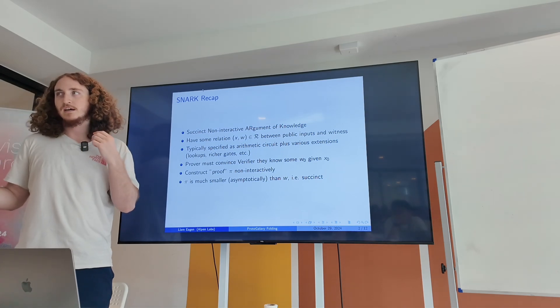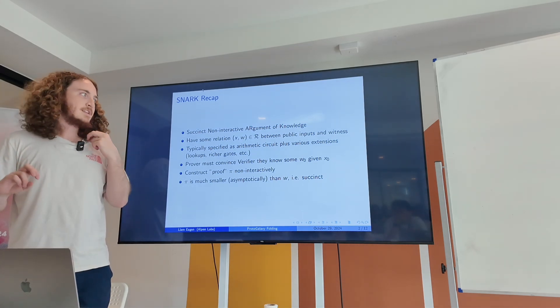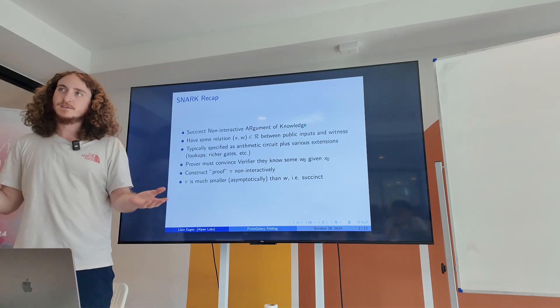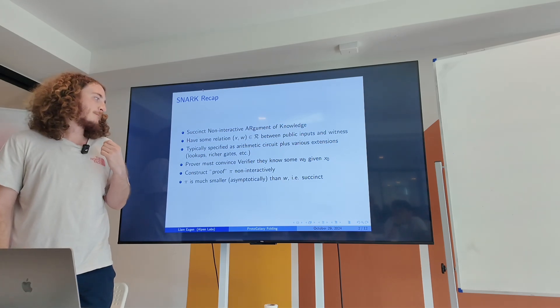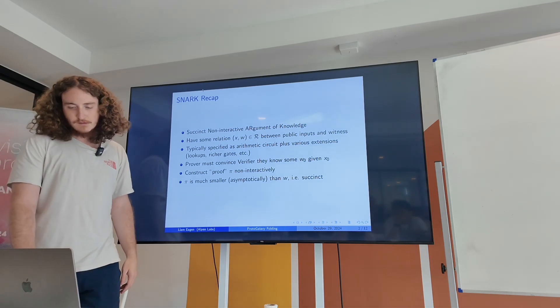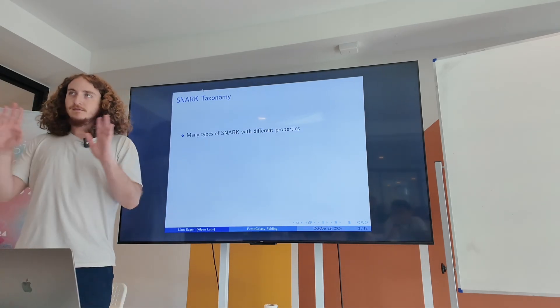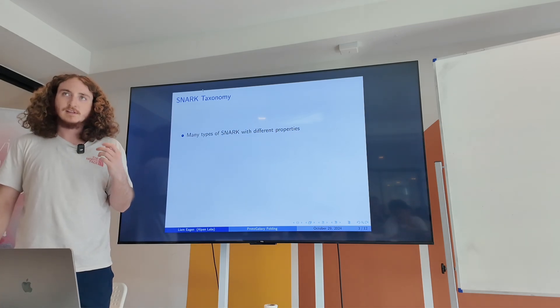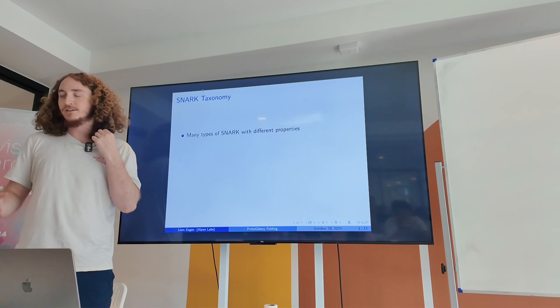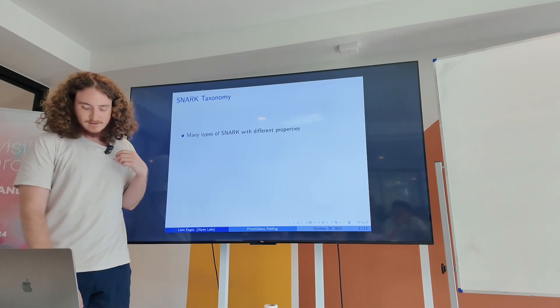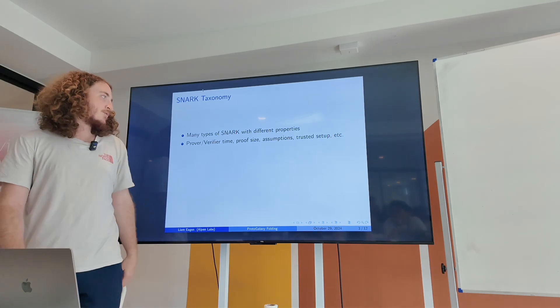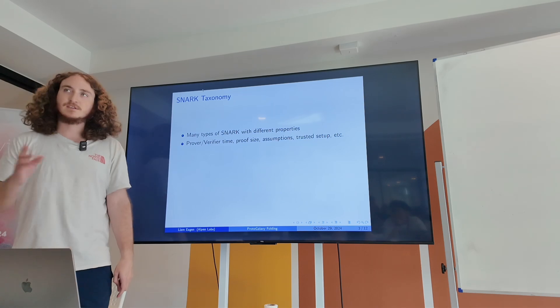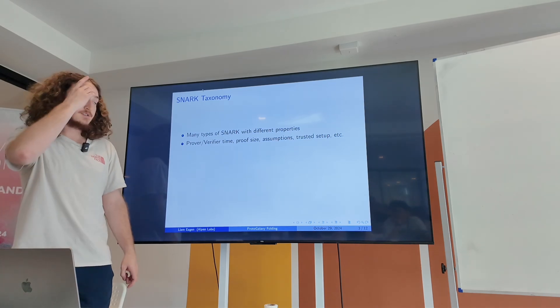For example, bulletproofs is not efficiently checkable in the sense that it takes time linear in the size of W to verify. Whereas something like Groth16 takes a constant amount of time to verify. There's lots of different types of SNARKs. There's not one correct SNARK for all applications.